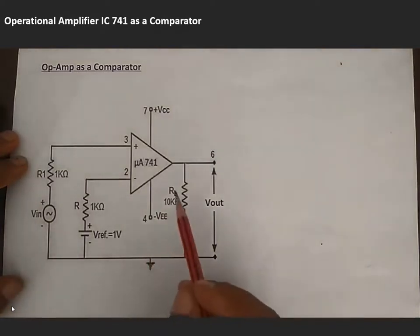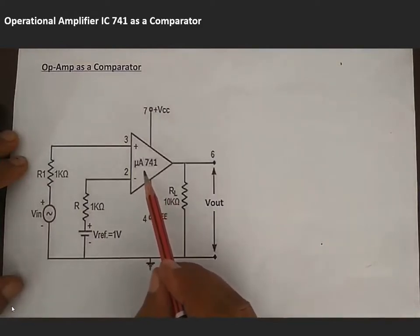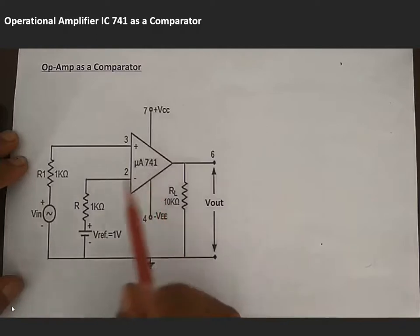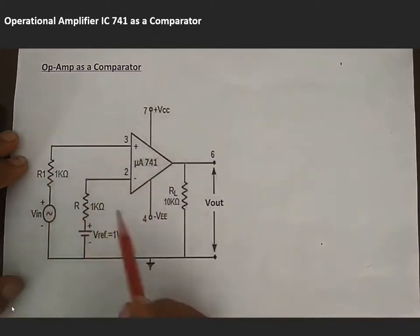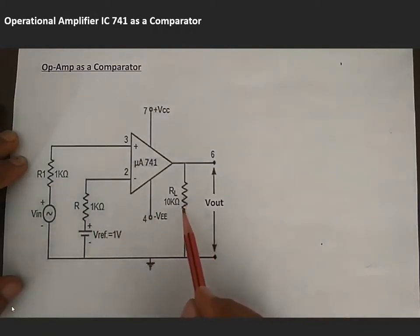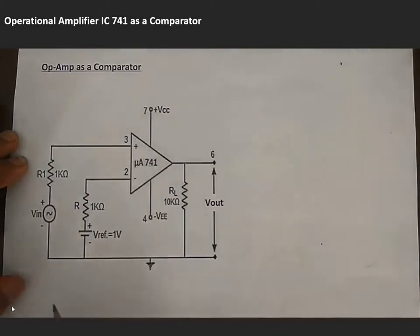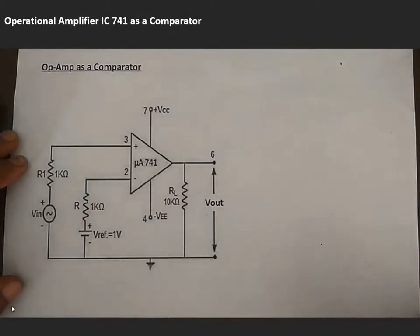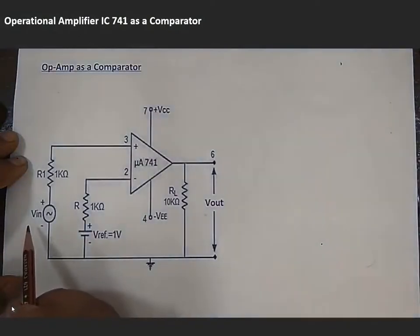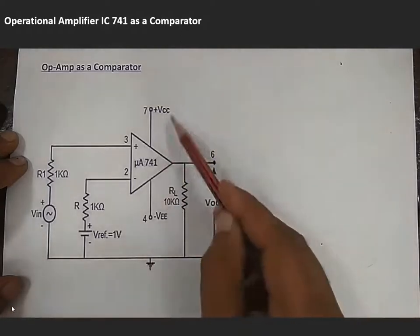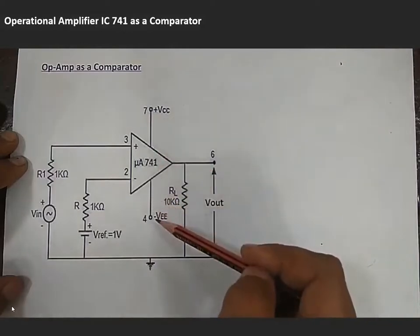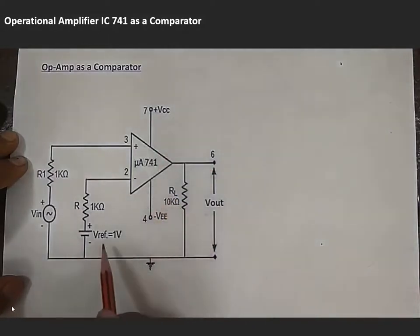First of all, arrange all the components required for this experiment. For this we need IC741, R1 of 1 kilo ohm, R of 1 kilo ohm, and RL of 10 kilo ohm. All connections will be made on a breadboard, so we need a breadboard and jumper wires. We also need an AC source to apply input, a DC power supply for plus VCC and minus VEE voltage, and reference voltage will also be applied from DC voltage.